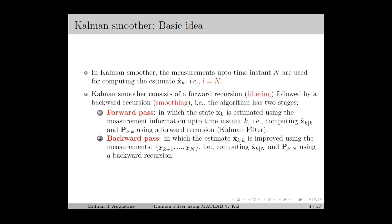In the Kalman Smoother, the measurement information at the time instant n are used for computing x̂k, which is the state estimate at the time instant k. Here n is the time horizon, and we denote l as the number of dimensions up to which the measurements are used in the state estimate. For the Kalman Smoother, we have l equal to n.